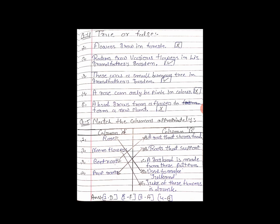Maine neeche answer likh diya hai. Agar aapko line kheenchni ho toh neeche boxes draw karke — number 1 ko D se, number 2 ko E se, number 3 ko A se, and number 4 ko B se match kiya hai. Theek hai? Aaj hamara chapter 11 hua khatam. So next video mein new chapter ke saath milenge. Tab tak stay home, stay safe. Bye!